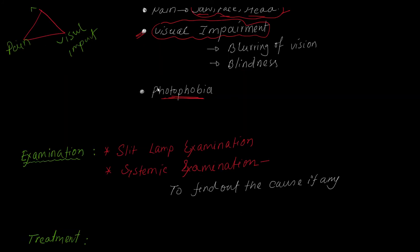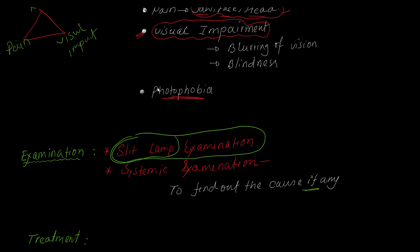How will you examine this patient? The patient should be examined ophthalmologically with slit-lamp examination. A slit lamp is a special type of microscope used by ophthalmologists to examine the eye. The doctor should also perform a systemic examination to find any underlying cause, such as rheumatoid arthritis, SLE, or spondyloarthropathy.